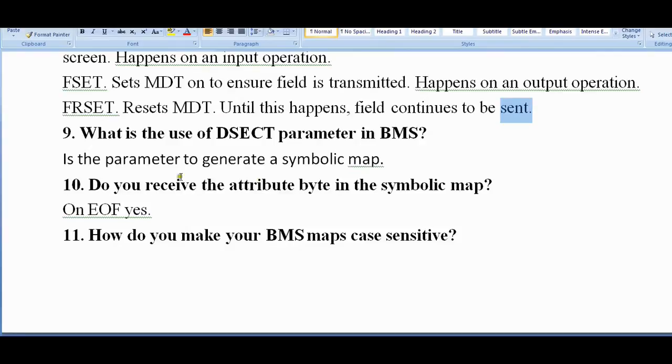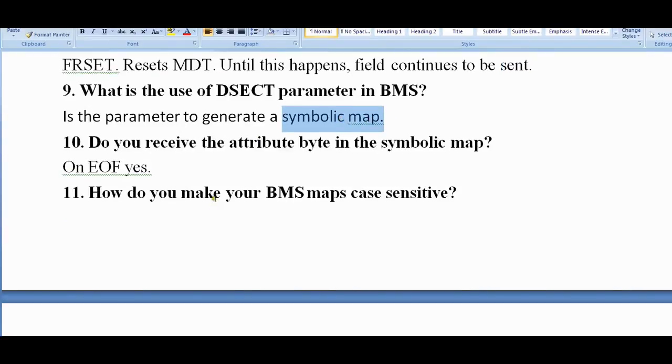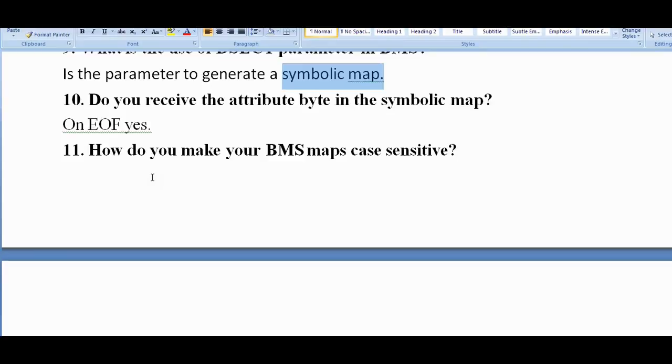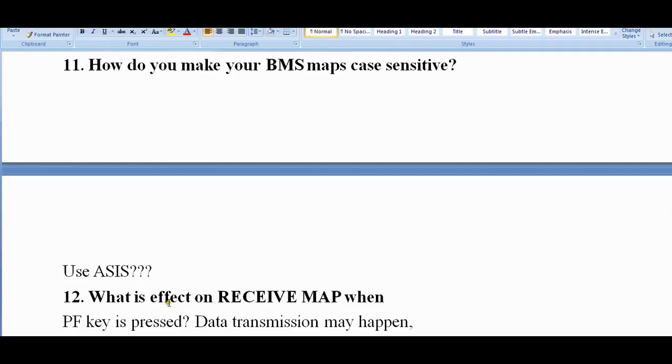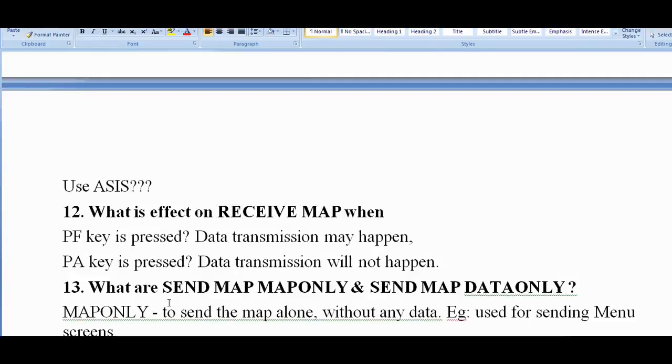What is the use of DSECT parameter in BMS? It's the parameter to generate a symbolic map. Do you receive the attribute byte in the symbolic map? Yes, on EOF yes.